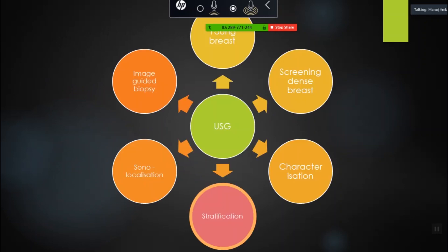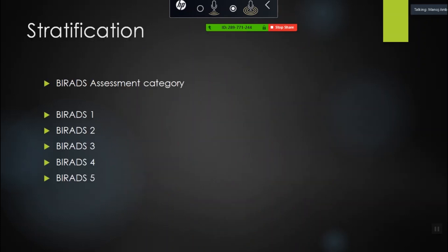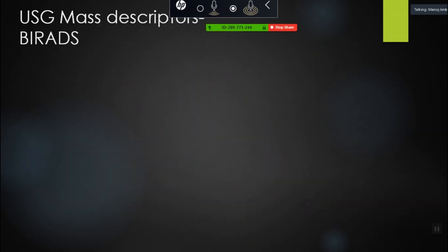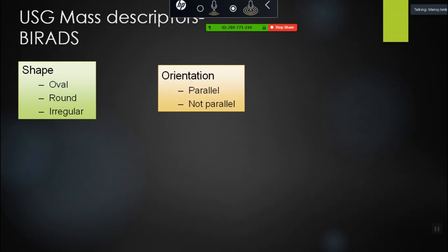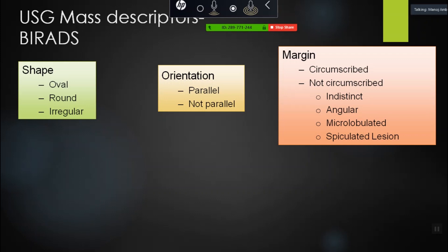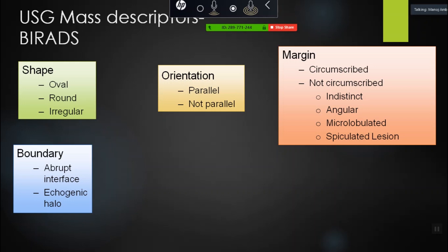The imaging BIRADS is based on your characterization. You have five categories of BIRADS. The mass descriptors include shape — oval, round, or irregular. Orientation — either parallel or anti-parallel. Margin — circumscribed or not circumscribed; not circumscribed margins can be indistinct, angular, microlobulated, or spiculated. Boundary — if there is an abrupt interface or an echogenic halo.